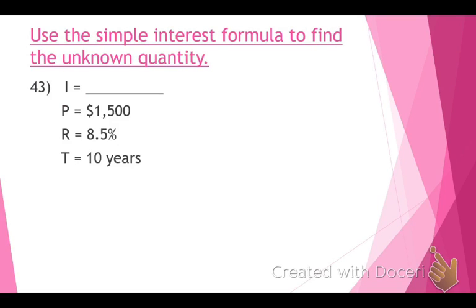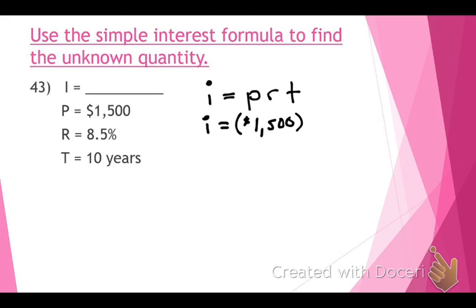Help me out with this one, Ashley. We want to start with our formula: I equals PRT. If I equals 1,500 times 8.5 times 10 — does anyone see anything that should be different? The decimal. We have to do something about this: 8.5 is not the same thing as 8.5%. We've got to change 8.5% to a decimal.